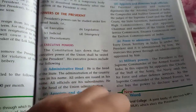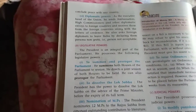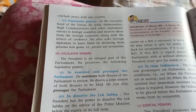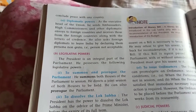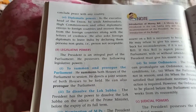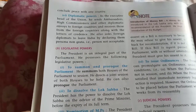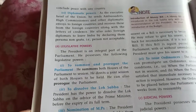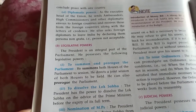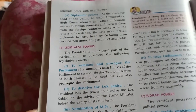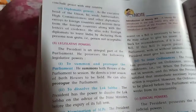He also has the power to declare war or to conclude peace with any country. Then, regarding diplomatic powers: as the executive head, he sends ambassadors, high commissioners, and other diplomatic representatives to foreign countries, receives representatives from foreign countries along with their letters, and can also ask foreign diplomats to leave India by declaring them persona non grata — meaning persons who are not acceptable.